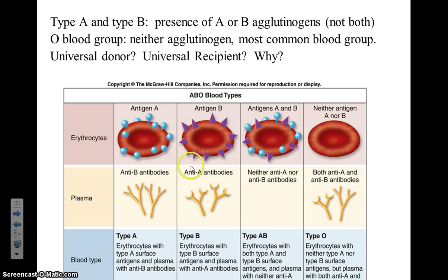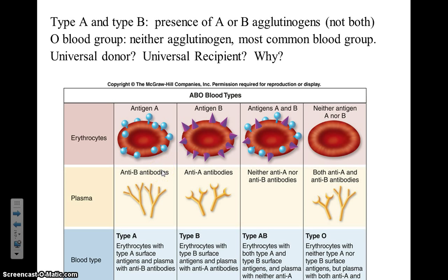Likewise, if someone is type B blood, they will have B antigens and produce anti-A antibodies. So if blood type A is introduced into their body, anti-A antibodies will bind to that blood type and create agglutination. One of these blood types is known as the universal recipient and can receive blood from any blood type. One person is referred to as the universal donor.